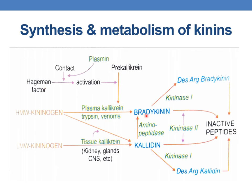Bradykinin is generated from high molecular weight kininogens by the action of plasma callicrin. Trypsin and proteolytic enzymes in snake venoms can also synthesize kinins. Bradykinin is synthesized from high molecular weight kininogen by the action of plasma callicrin and it usually does not cross the capillaries. Calidin is produced from both high molecular weight and low molecular weight kininogens by the action of tissue callicrin.